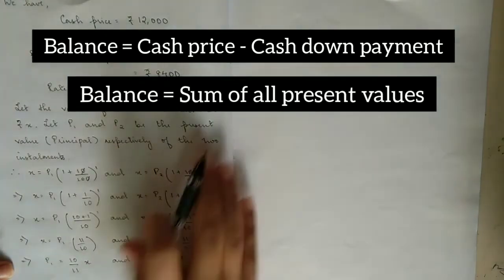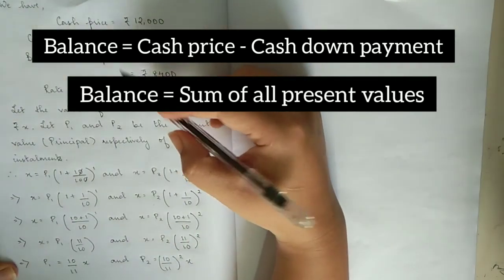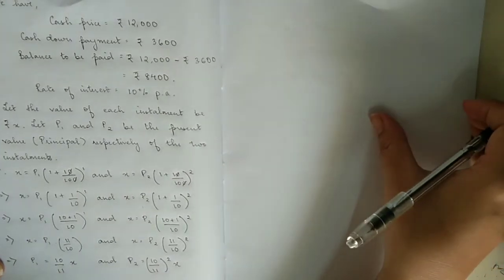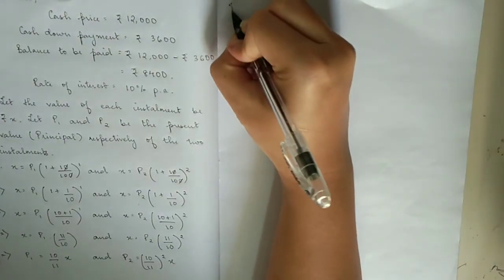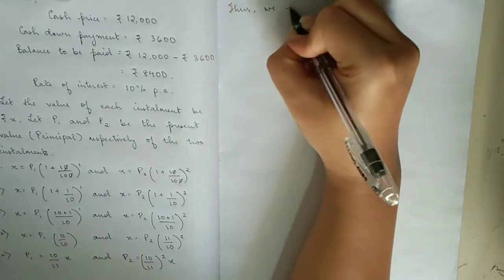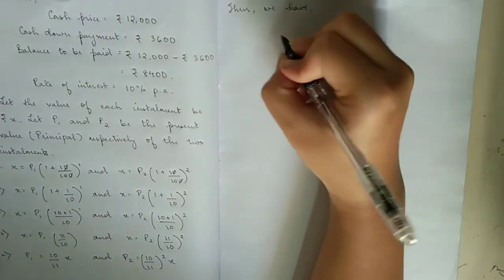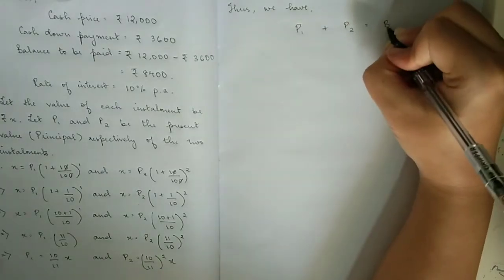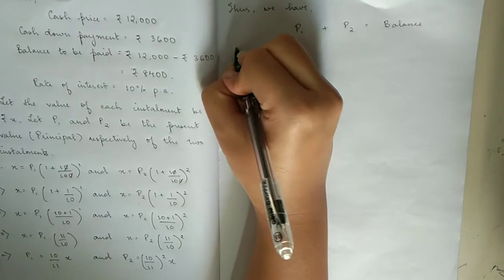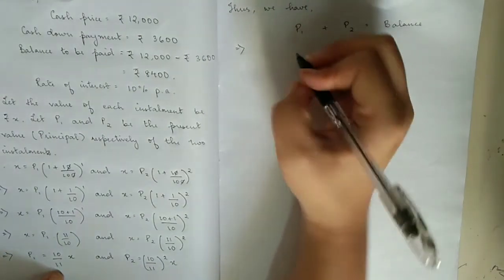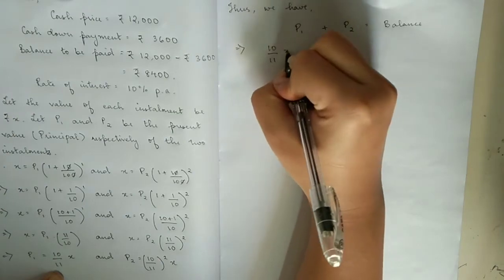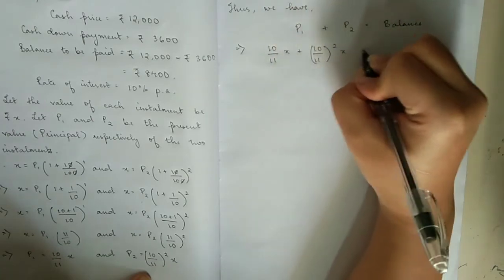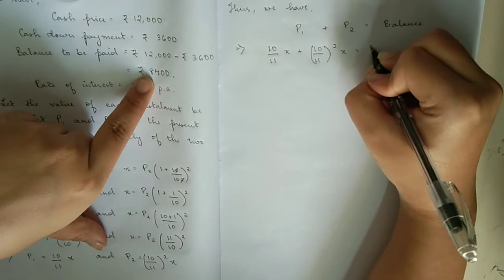The other formula is: the balance equals all the present values added together. So here, P1 plus P2 equals the balance. This implies: (10/11)x plus (10/11)² x equals 8,400.